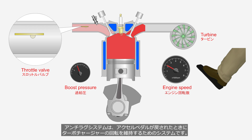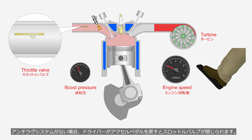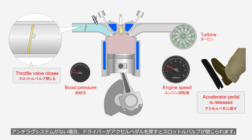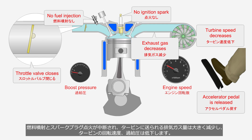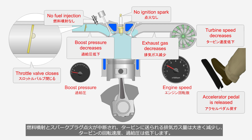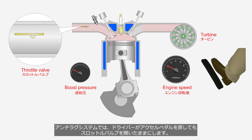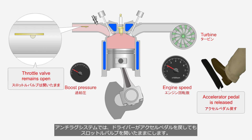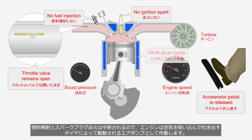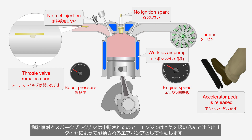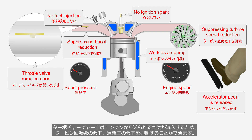The anti-lag system is designed to maintain the rotation of the turbocharger wheels when the accelerator pedal is released. Without an anti-lag system, when the driver releases the accelerator pedal, the throttle valve closes, fuel injection and spark plug ignition are interrupted, causing a significant reduction in exhaust gas sent to the turbine wheel, resulting in decreased turbine wheel rotation speed and boost pressure. In an anti-lag system, the throttle valve remains open even when the driver releases the accelerator pedal. Since fuel injection and ignition are interrupted, the engine operates as an air pump driven by tire rotation, sucking in and expelling air, suppressing the decrease in turbine wheel rotation speed and boost pressure.